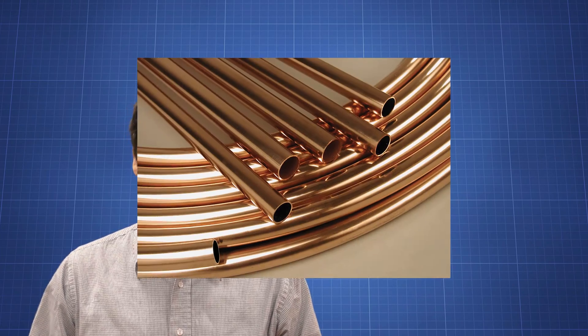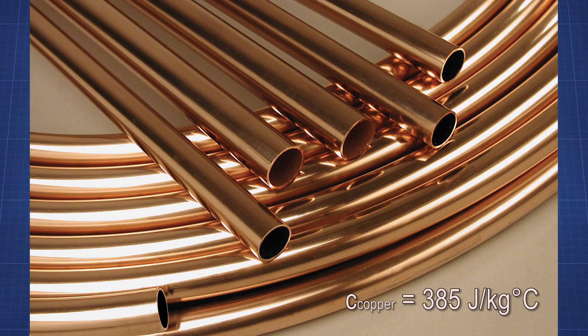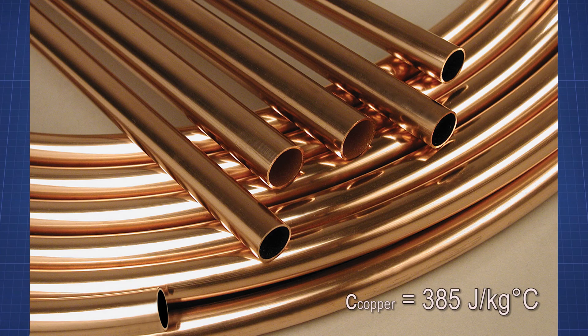Here's what that means. If I want to increase the temperature of 1 kilogram of water by 1 degree Celsius, I need to add 4,186 joules to that system. Compare that to copper. Copper has a specific heat of 385 joules per kilogram degree Celsius, meaning that copper takes a lot less energy to warm up than water because it's a conductor of heat.